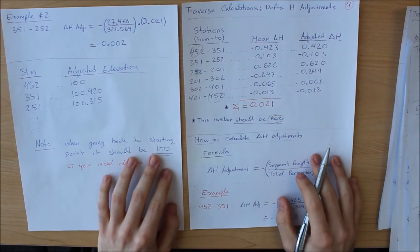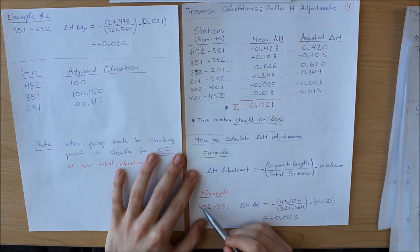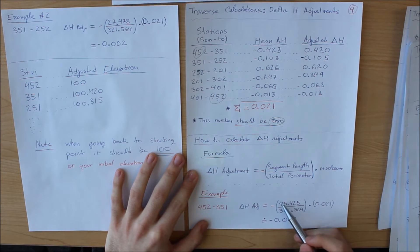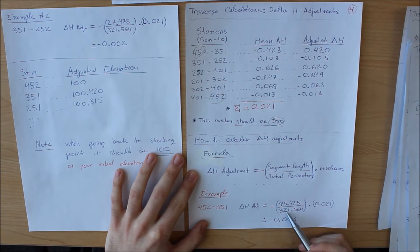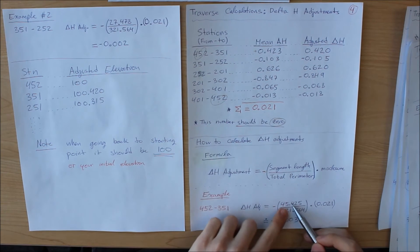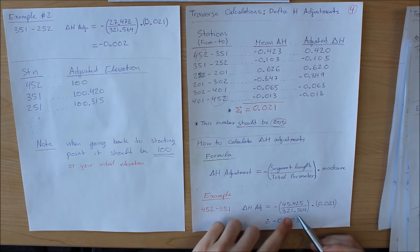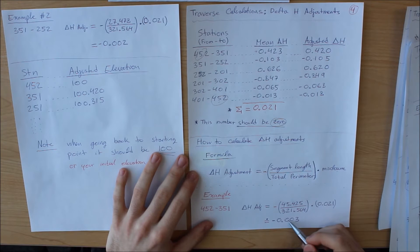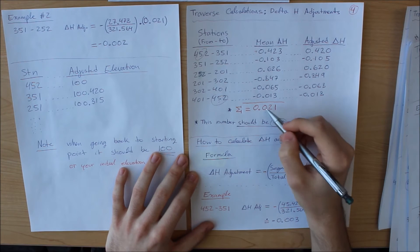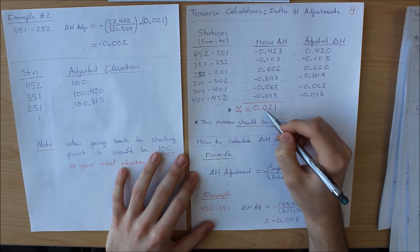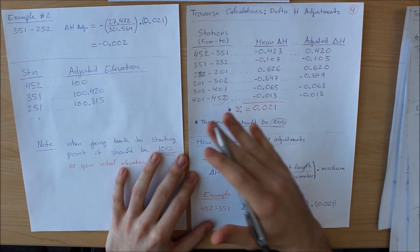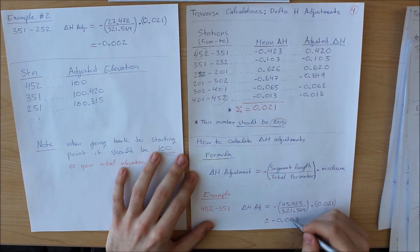So here is one example of how this works. From 452 to 351, that's equal to the segment length divided by the total perimeter times our error. Now I am going to get this result right here, and as you notice, it's a negative, which makes sense because we are over in the positive zone, which means you have to bring it down. Therefore we must subtract.